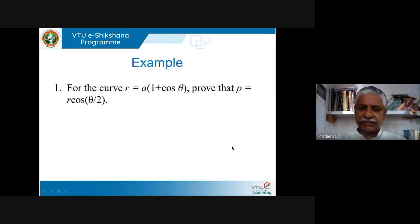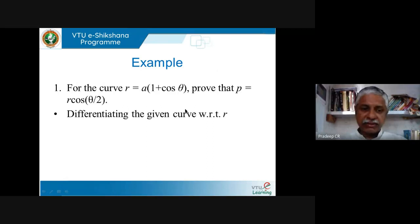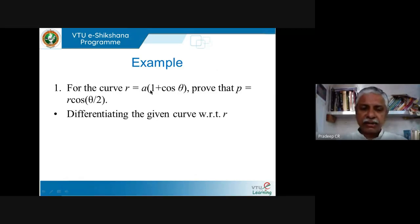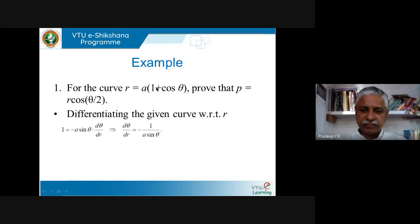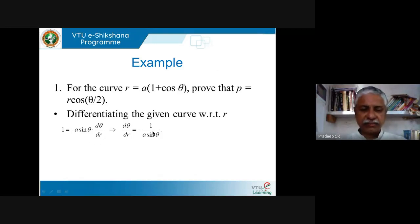Let's see an example. For the curve r = a(1 + cosθ), we want to prove that p = r·cos(θ/2). Differentiating the given curve with respect to r: 1 = −a·sinθ·(dθ/dr), which means dθ/dr = −1/(a·sinθ).